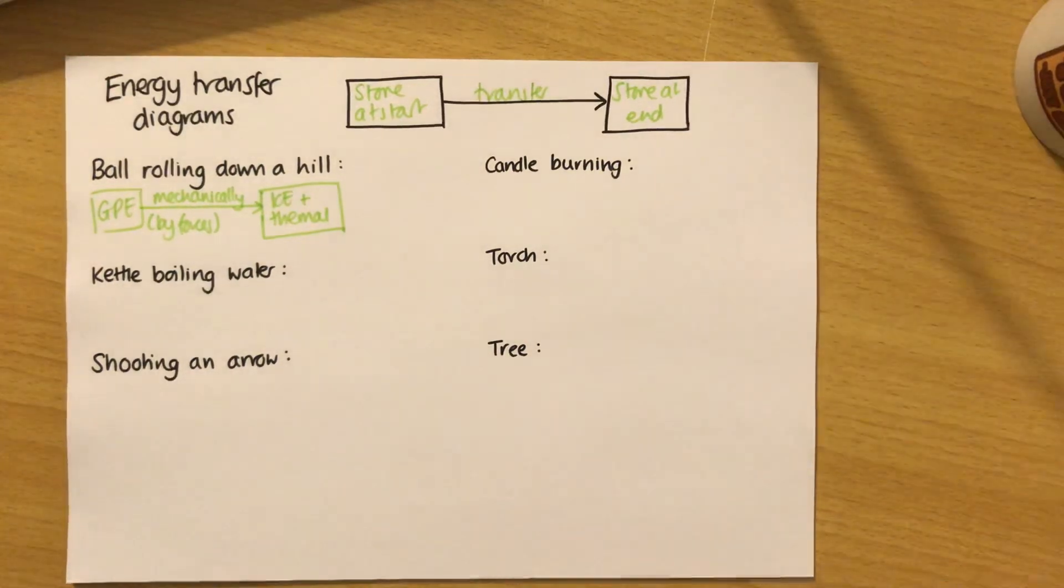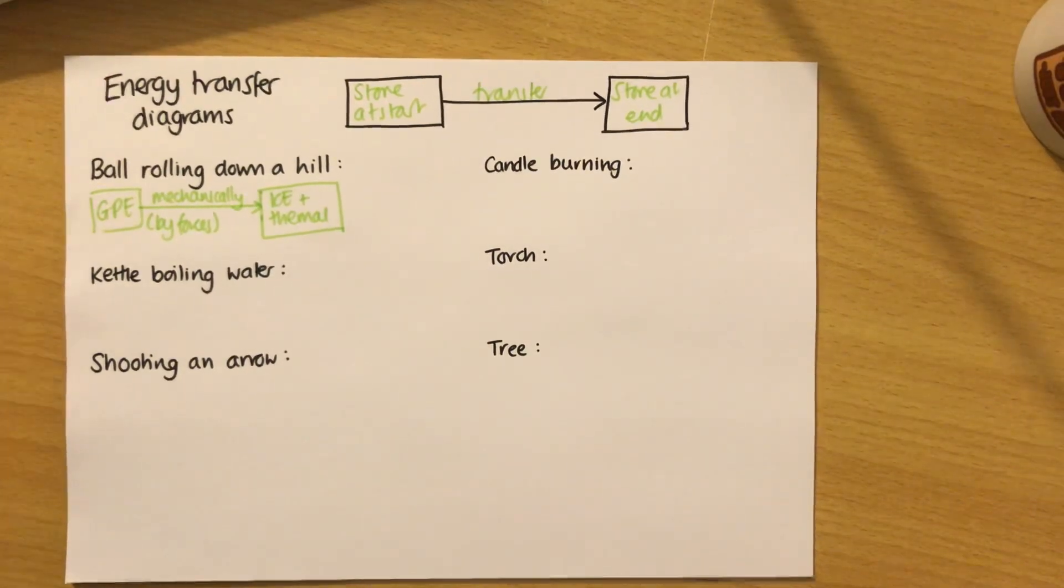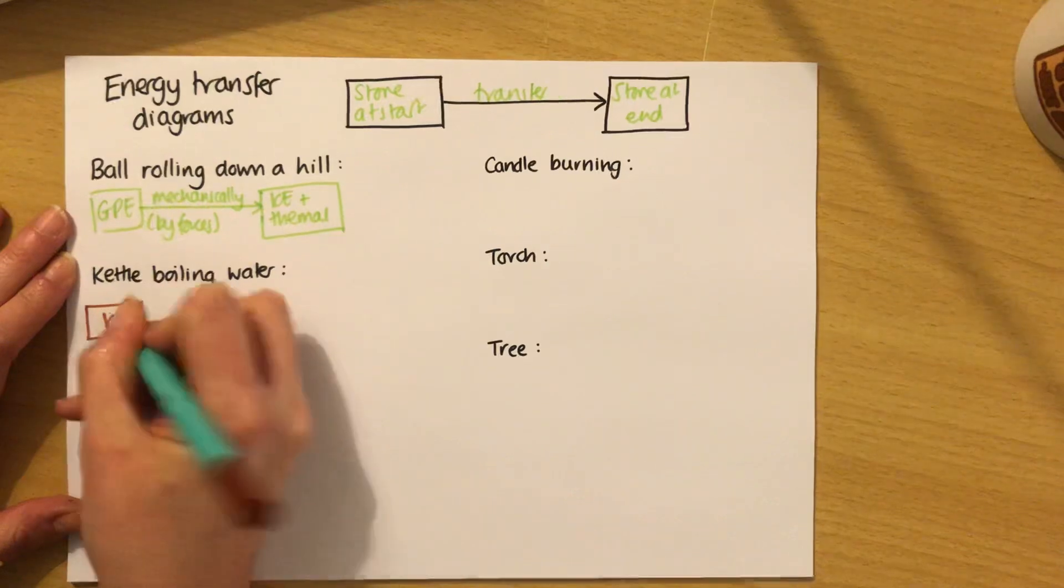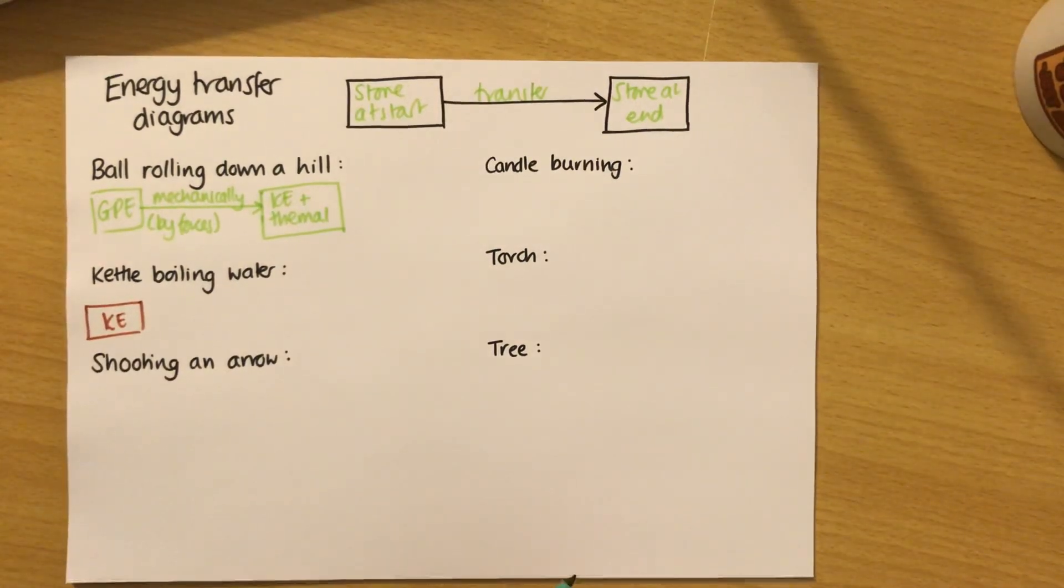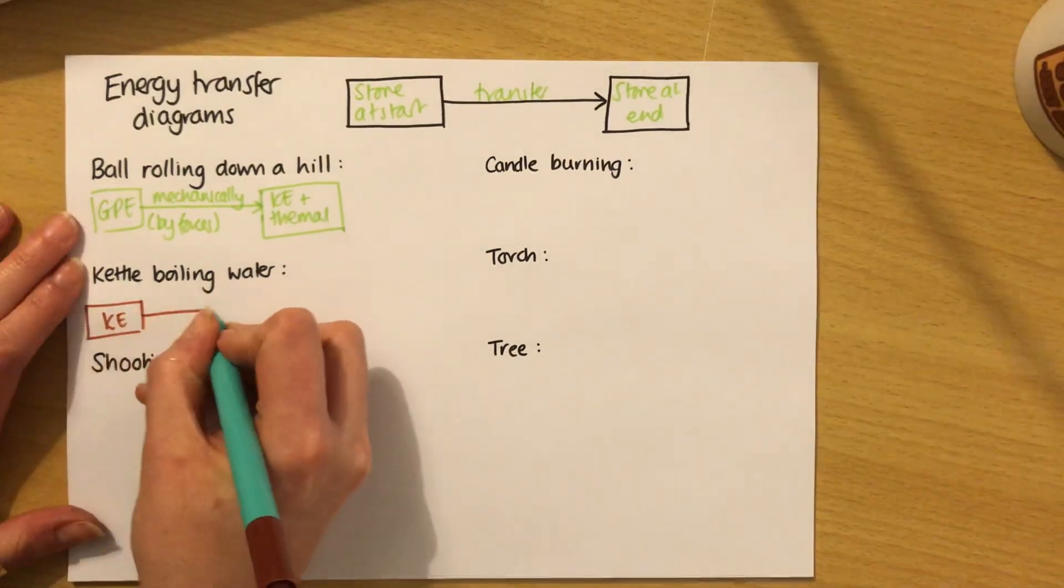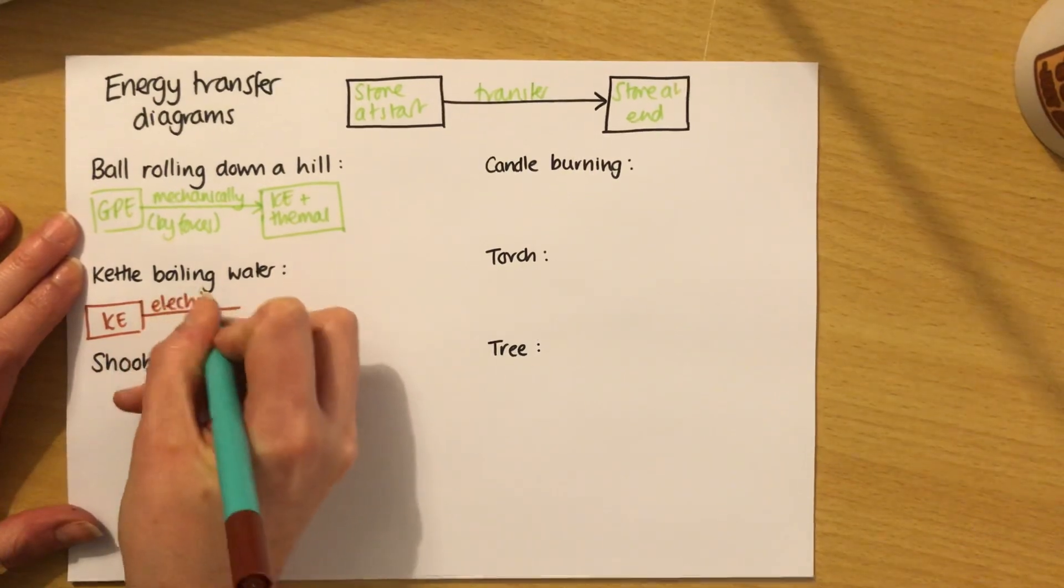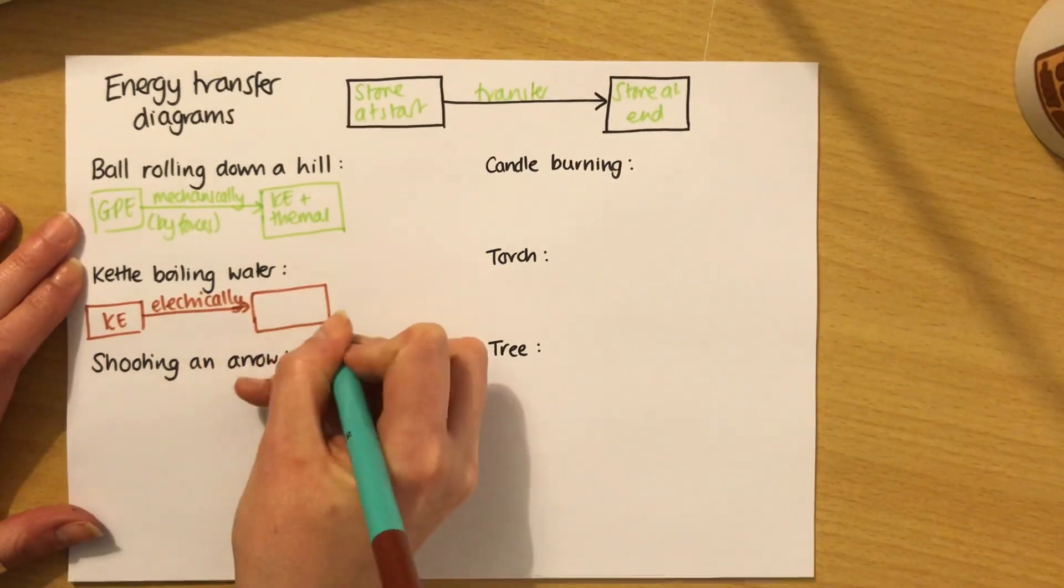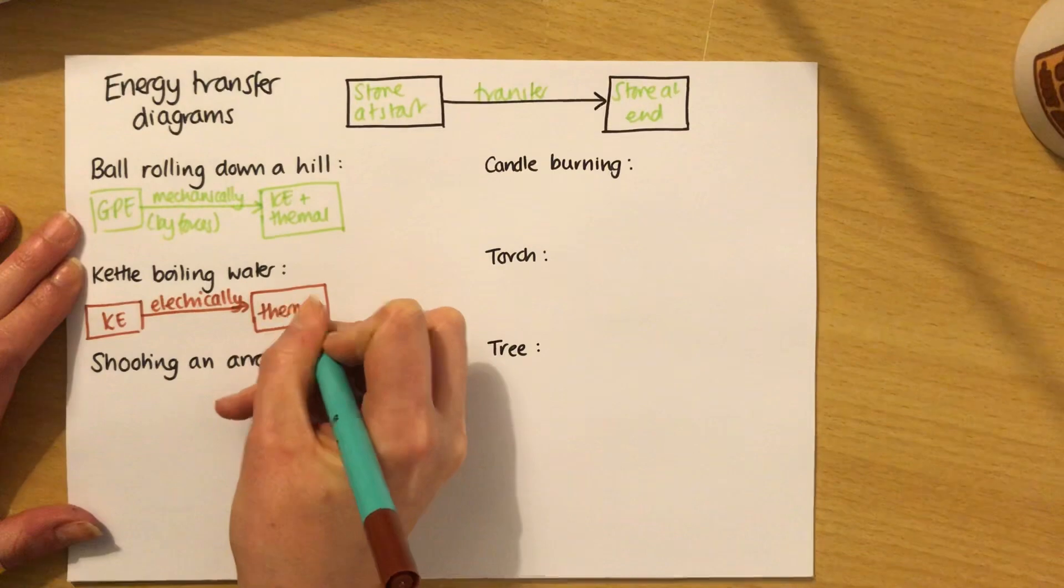A kettle boiling water. I'm going to imagine this is a normal kettle plugged into the mains. The mains is an electricity supply, but electricity is not an energy store. So we can't write that in our first box. What we actually have to write is KE, because electricity is made when, in a power station somewhere far away, a turbine is spun by some kind of, usually steam. So that spinning turbine has kinetic energy. And that is what then makes the electricity. So then the transfer is electricity or electrically.